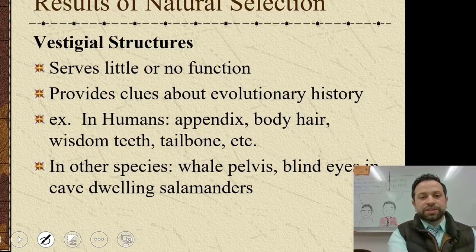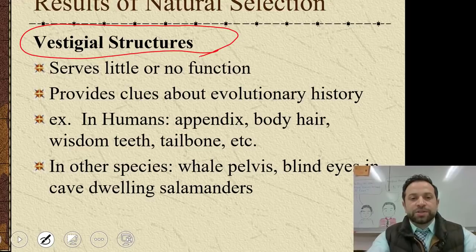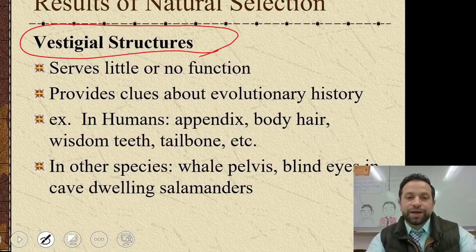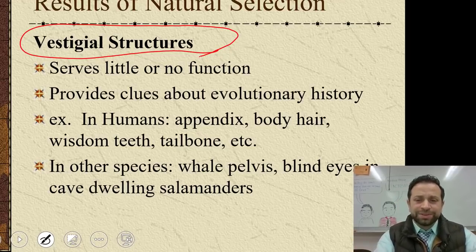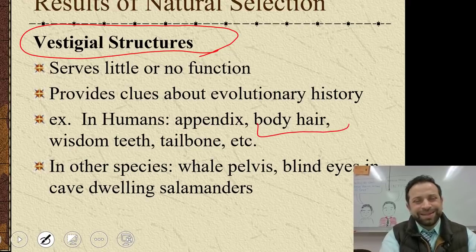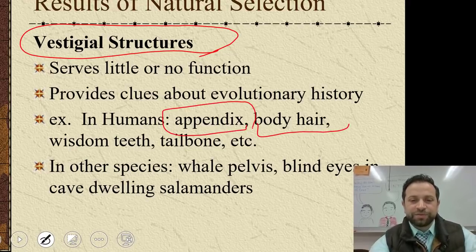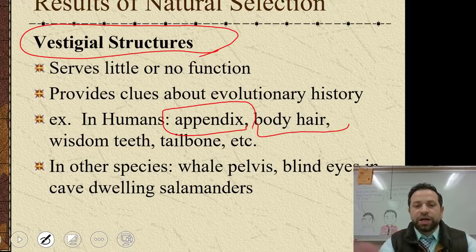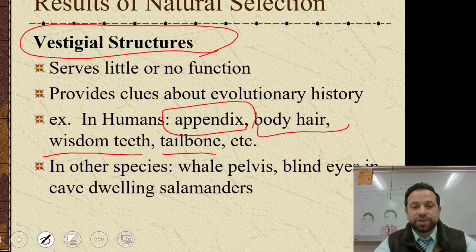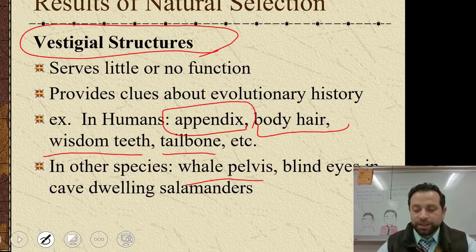Vestigial structures are structures you have in your body that have little or no function, and they give clues about our evolutionary history. In humans, examples include body hair, the appendix, wisdom teeth, and the tailbone. In other species, the pelvis of a whale is considered a vestigial structure.